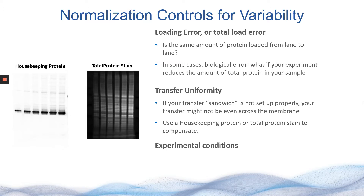The first step is loading errors. You want to make sure that any increase or decrease in the intensity of protein is not directly related to unevenly loading proteins on your gel. Different parts of the membrane could also transfer less efficiently than others, which could directly impact the amount of signal intensity observed in the downstream imaging step. Normalization helps researchers to control for both of these variables.